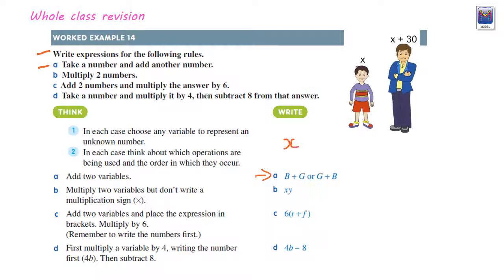I could have said I'm going to make my variables x and y. Take a number, add another number. Alright, they're all the same thing. B, multiply two numbers. Once again, just pick two variables but multiply them. x, y will do.